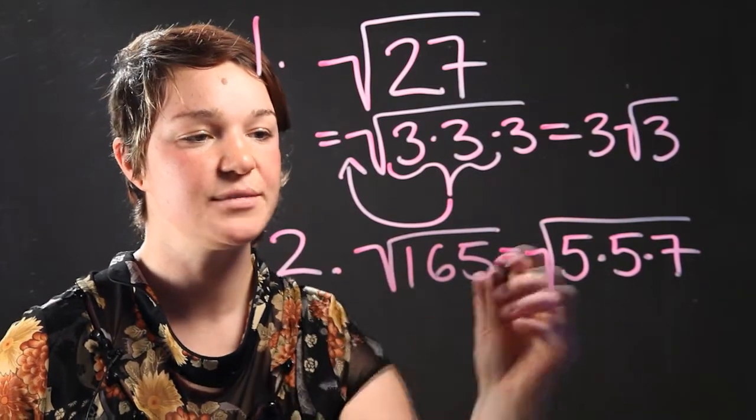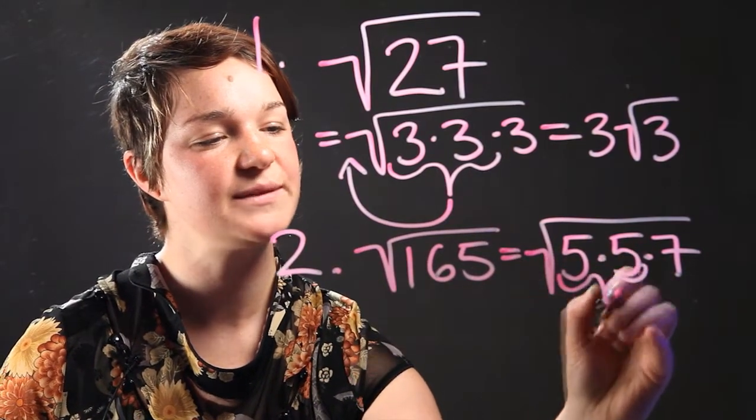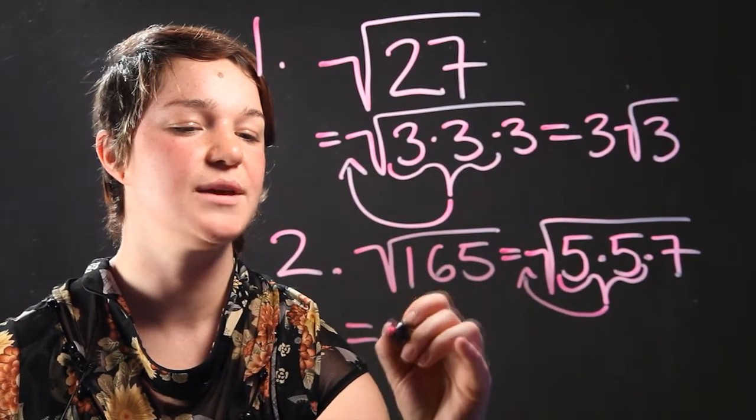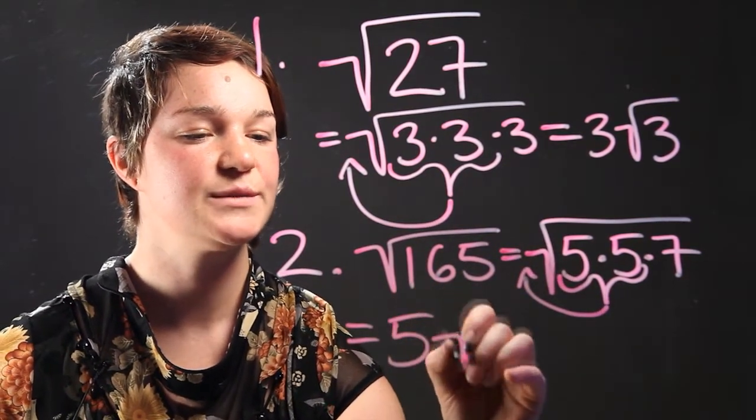Once again, in order to simplify this, we're going to take 5 times 5, put it outside of the radical expression, and this is going to be equal to 5 times the square root of 7.